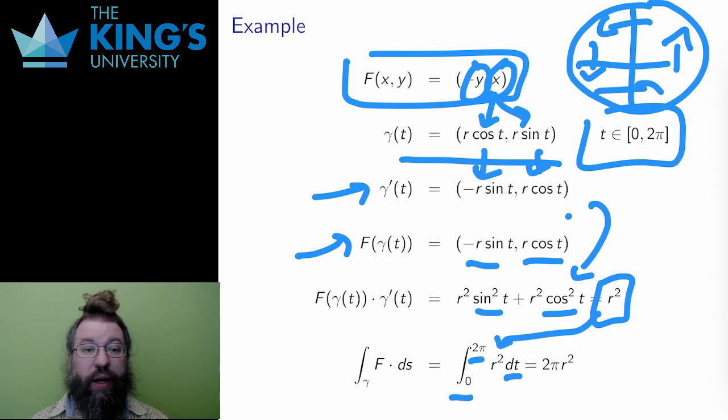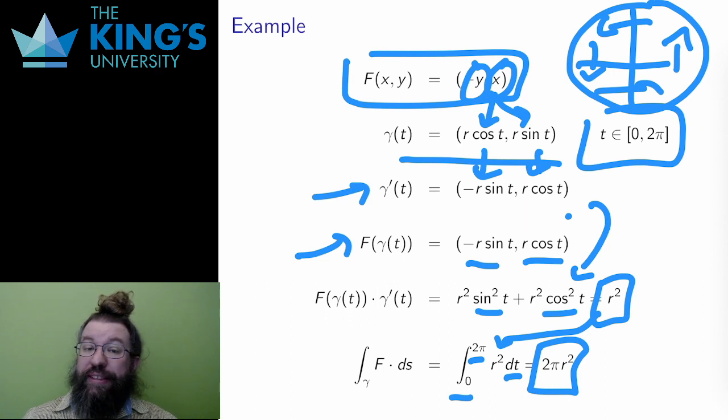Then the line integral is the integral of this dot product in the variable t over the domain of the curve, in this case 0 to 2π. Well, this is just a constant, so the integral is 2πr². Do note that all these line integrals turn into single variable integrals in t. We're not even doing multiple integration here.